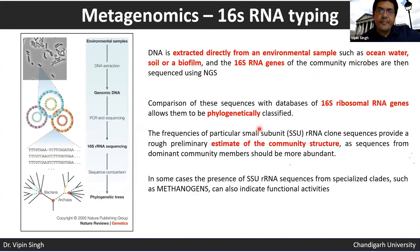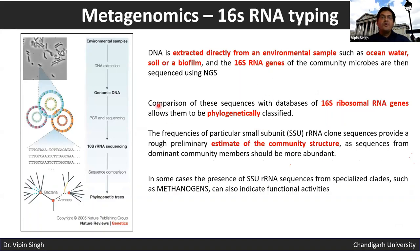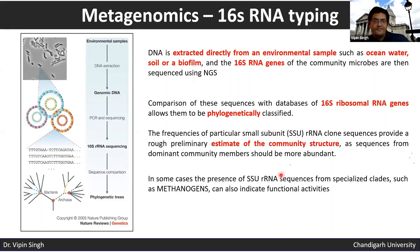Metagenomics uses 16S rRNA typing. The 16S rRNA region is characteristic for each species, so you can do targeted sequencing of 16S rRNA genes in your population sample, identify the species present, and determine community relationships based on the abundance of particular 16S rRNA signatures.